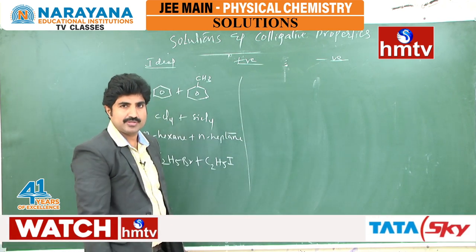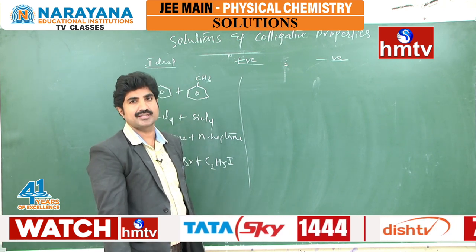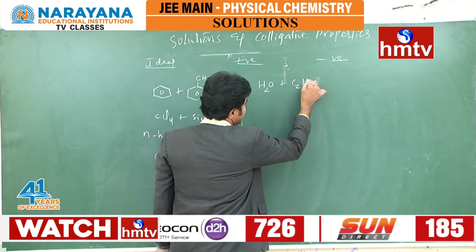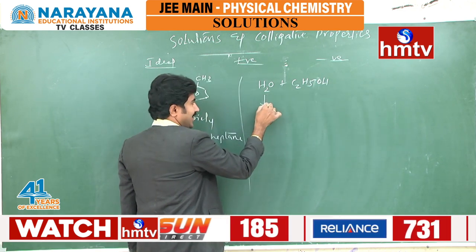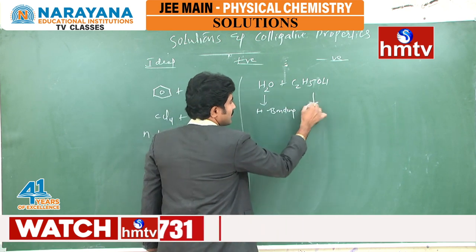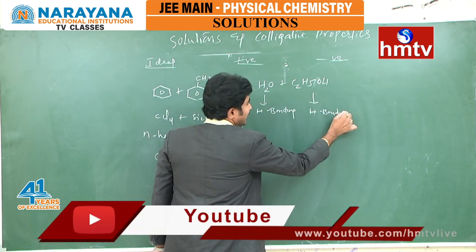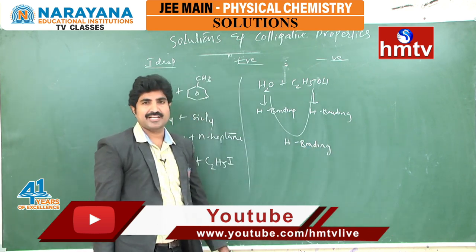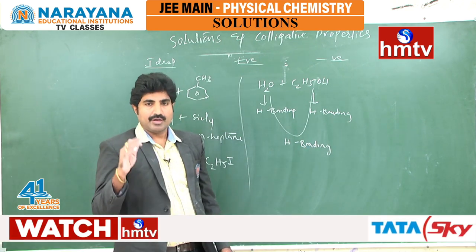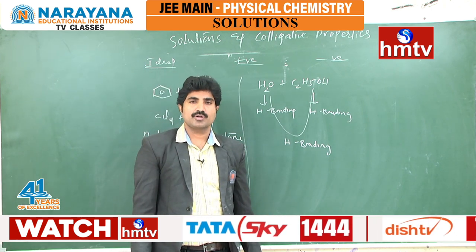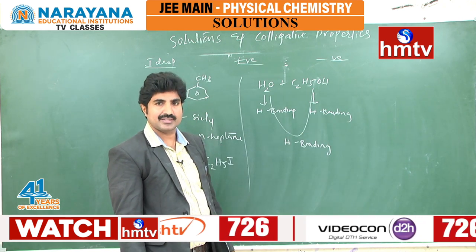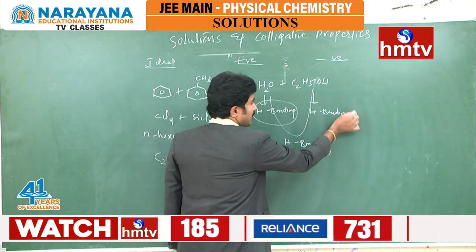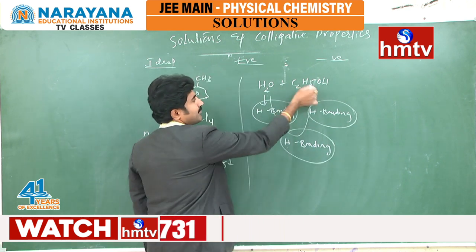For positive deviation, heat must be absorbed during mixing. The best example is water and ethyl alcohol. Water has hydrogen bonding, ethyl alcohol also has hydrogen bonding, and between these two there is also hydrogen bonding. These combinations can be explained by hydrogen bonding: individually water has hydrogen bonding among water molecules, and ethyl alcohol has hydrogen bonding among its molecules. Between water and ethyl alcohol there is also hydrogen bonding.